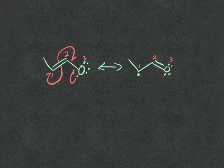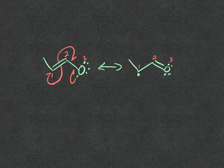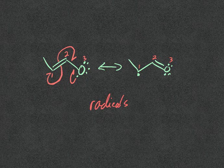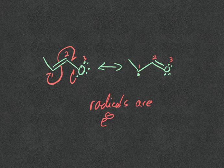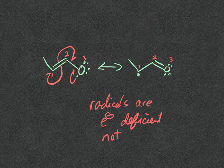Now the question is, we've got to remember: radicals are electron deficient - they don't have a full octet.